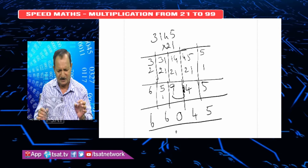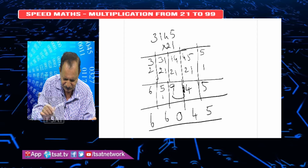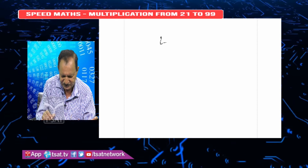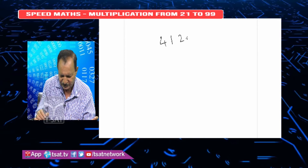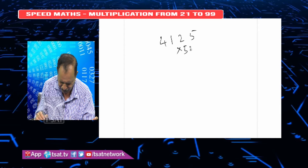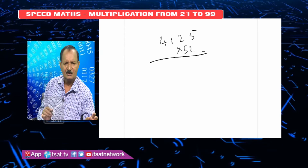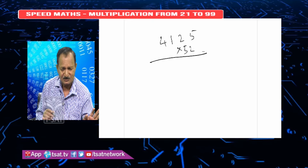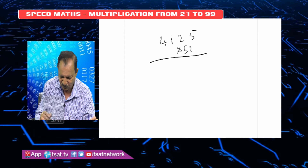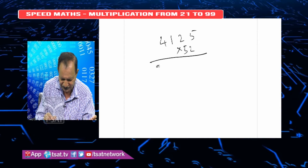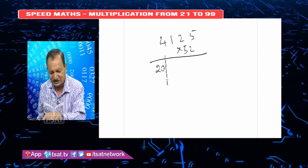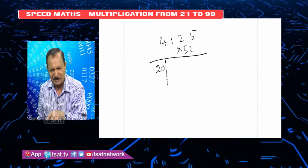Simple — you can find it yourself. I will show you another example. 25 into 52. First step is 4 into 5 equals 20. Next is 41 to 52, again the cross multiplication.